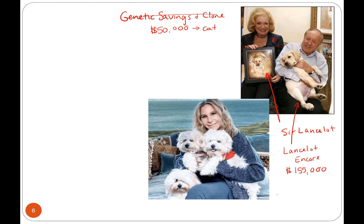This is a picture of Barbara Streisand. She cloned her favorite dog and got two puppies — two clones. The first dog cloned in 2004 — not a pet, but another dog — was called Snuppie, an Afghan hound. I believe this was also in Korea.